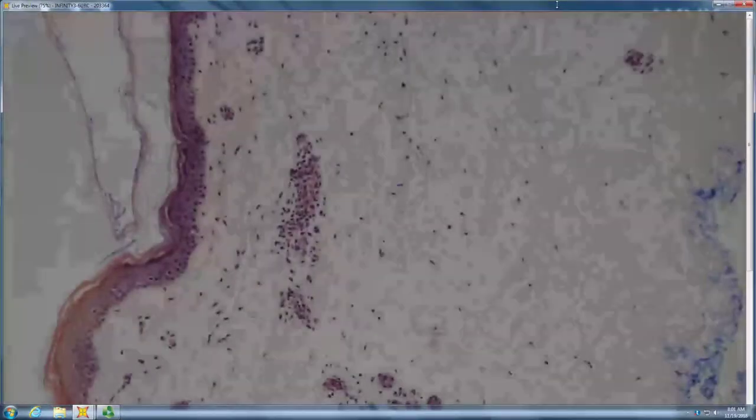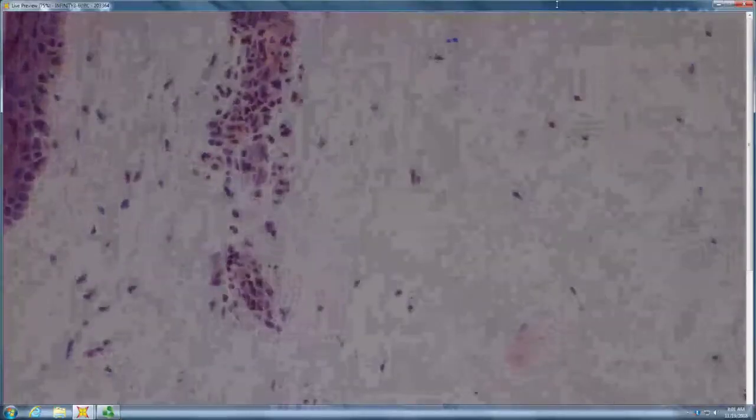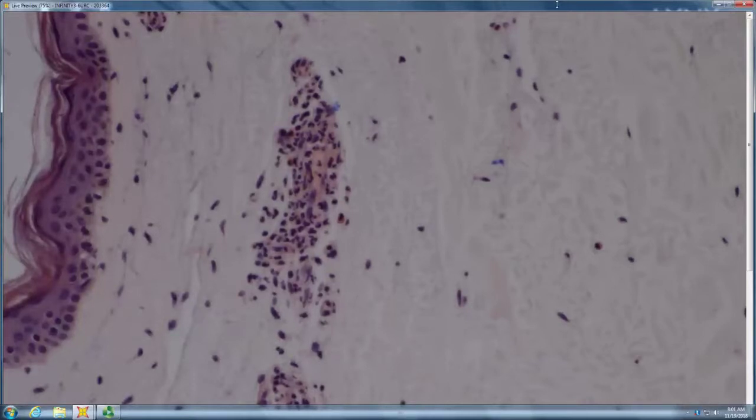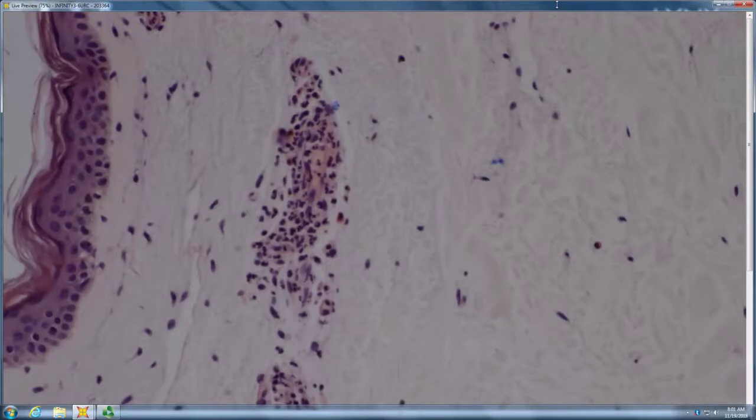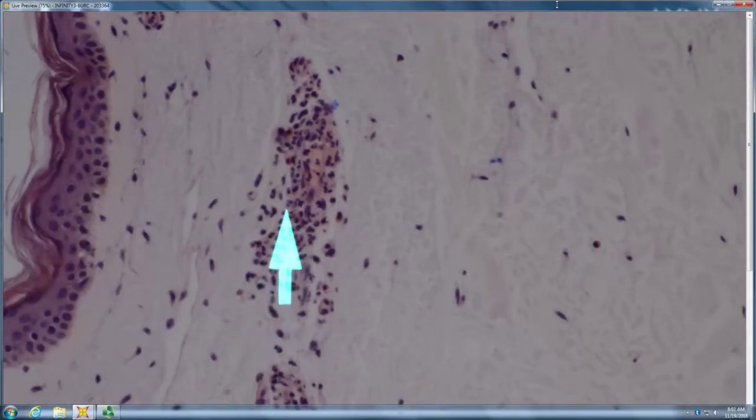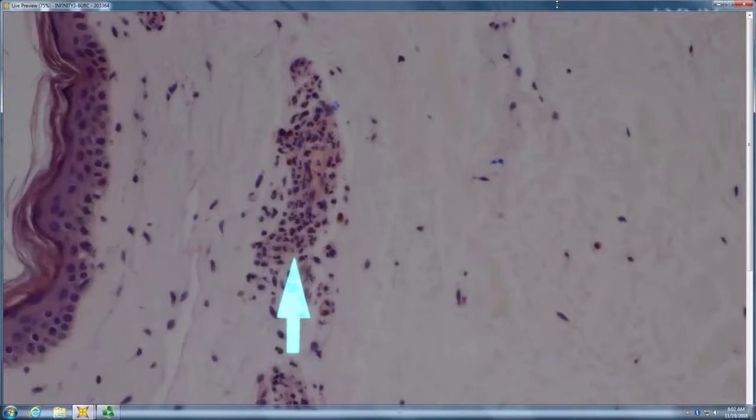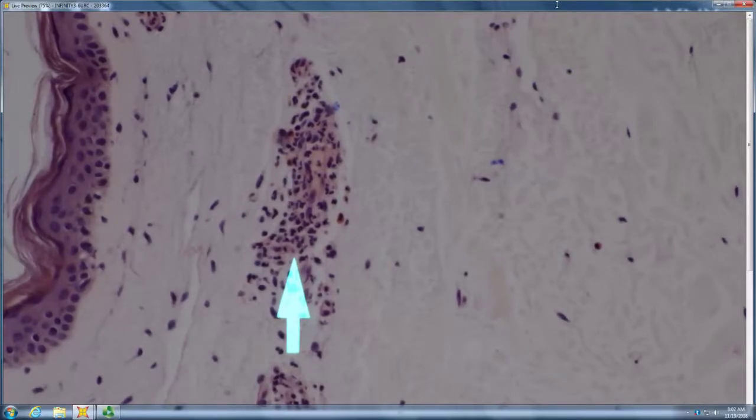We have a dermal infiltrate around adnexal structures. And the infiltrate is composed of? It looks like there's some eos, neuts. So neuts and eos. And lots and lots of fragmentation of those neuts, right? Yeah, I see a lot of fragmentation. Do you see fragmentation of the neuts, or are all your neuts intact? I agree with you that all your neutrophils are intact. And you were right, that's good for urticaria. So Still's, urticaria phase of Still's disease, urticaria, erythema marginatum, the things that are not vasculitis, right? So urticaria, you don't get karyorrhexis.